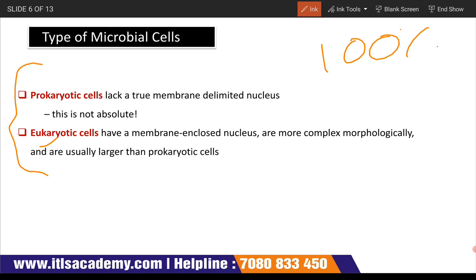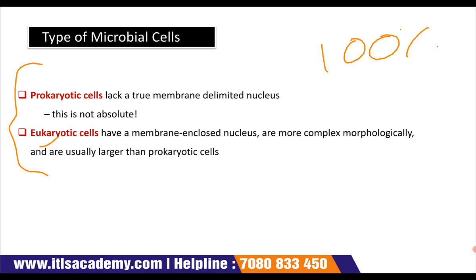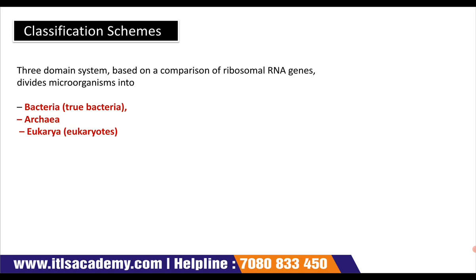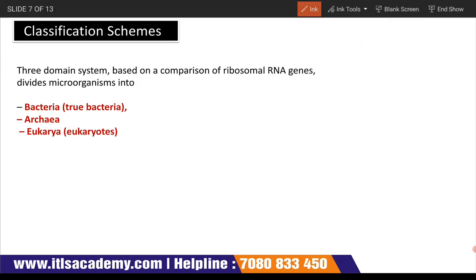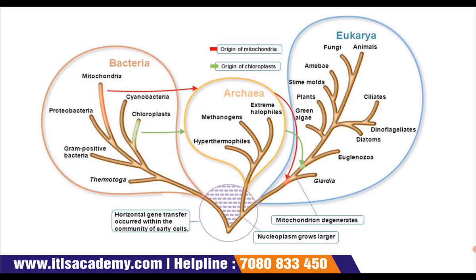Prokaryotic cells lack membrane-bound organelles whereas eukaryotic cells have a membrane-enclosed nucleus. If we talk about the classification scheme, there is a three-domain system based on comparison of ribosomal RNA genes that divides microorganisms into different parts. Microorganisms are divided into three domains: the first is Bacteria, second is Archaea, and the third is Eukarya. Let's understand these three terms with the help of a diagram.